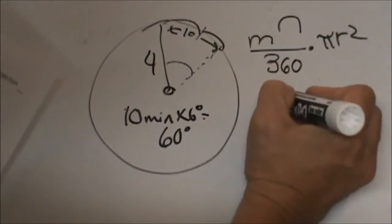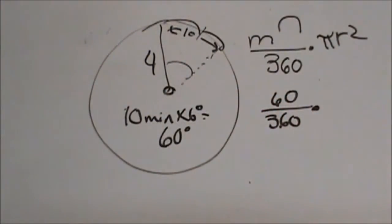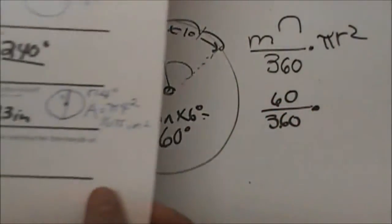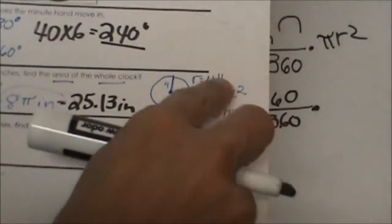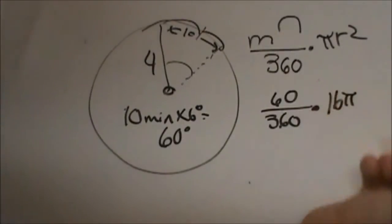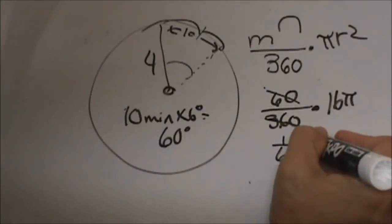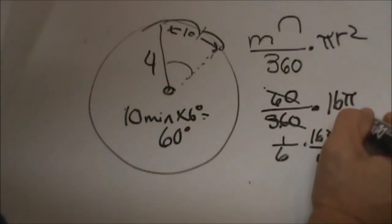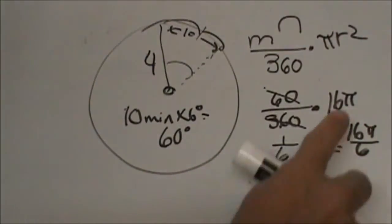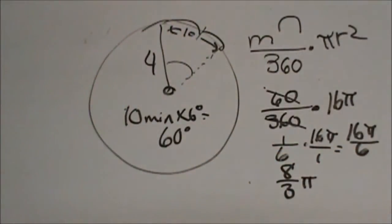So it is 60 degrees over 360 times πr². Well we just figured out our area in the previous problem. So we have 16π as our area so I am going to plug in 16π. So what is 1/6 because this reduces to 1/6 times 16π. Stick a 1 underneath that gives us 16π over 6 which is 8/3 π is our sector area.